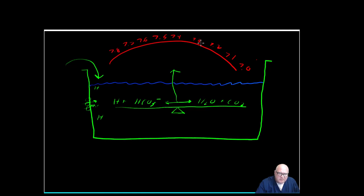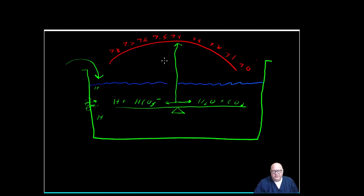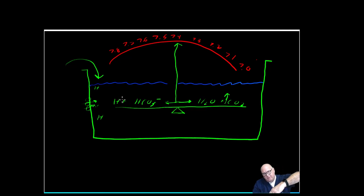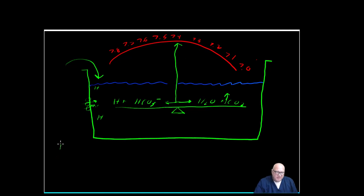With this seesaw system, you can have different problems. If your CO2 gets too high — say it rises to 50 — this side becomes heavy, the whole thing tilts right, and the pH starts to drop. That's called a respiratory acidosis. If the CO2 drops to 30 instead of 40, this side becomes too light; the seesaw tips to the left and we start to get an alkalosis — a respiratory alkalosis.